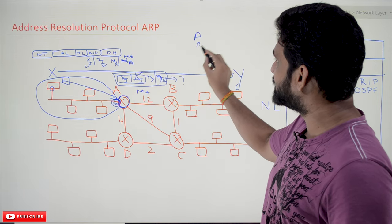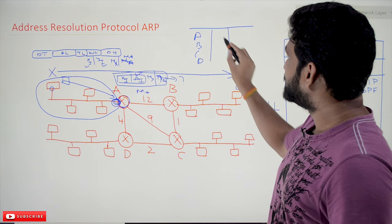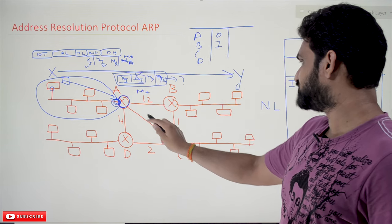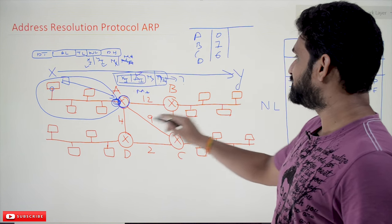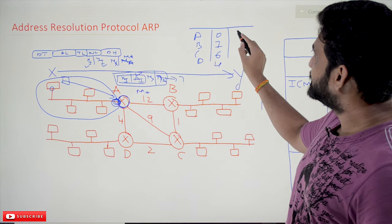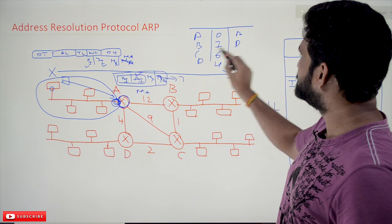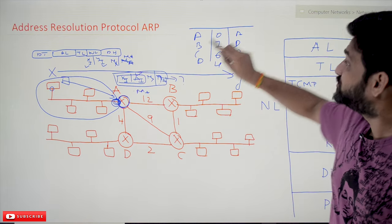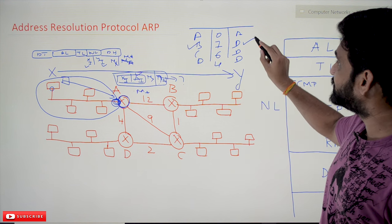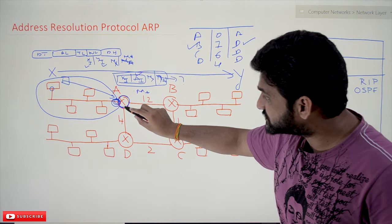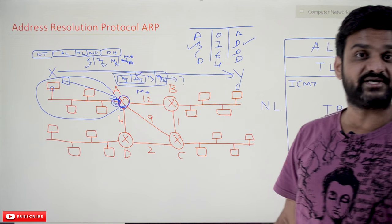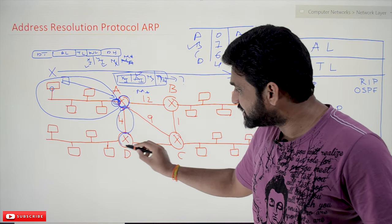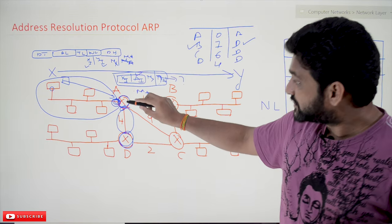Using the routing table, it gets the source and destination IP addresses. The routing table has entries like: A to A is 0, A to B is 7, A to C shortest path is 6, and A to D is 4. The next hop from A to B is D, A to C is D, and A to D is D. In order to transmit to B, the packet has to be transmitted to D. Again ARP comes into action for this next data link layer hop.